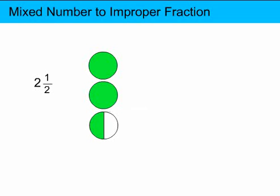In this example, we have a mixed number 2 and 1 half, which of course is represented by 2 whole parts and half of a whole part. So once again, we take the whole parts and we divide them the same way the fraction is divided, using the denominator, the bottom number of the fraction, to determine that.